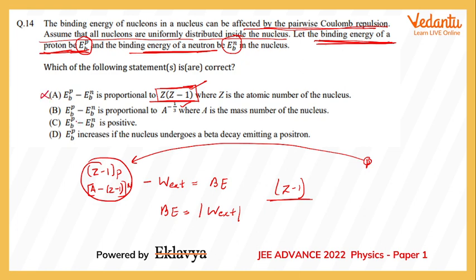Now, this difference in the binding energy of protons and neutrons is proportional to A raised to the power minus 1/3. I will take inspiration from the relationship in which the radius of a nucleus depends on the mass number to the power 1/3. Whatever separation we are looking at will be some factor of the nuclear radius, and since the coulombic interaction between a pair of charged particles has distance in the denominator, this option B should be the correct one.